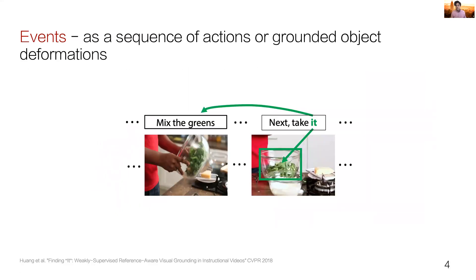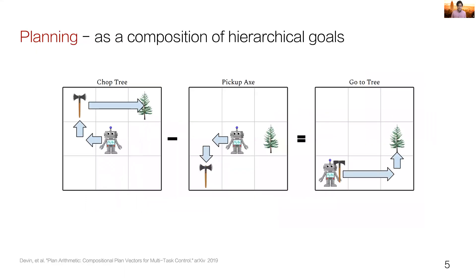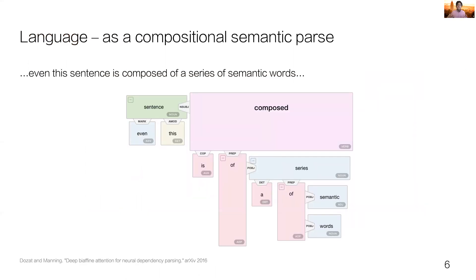Representation of events as a sequence of actions and grounded object deformations have led to action graph models that ground object changes as edges within a graph representation. Planning can also be described as a set of hierarchical goals, allowing the ability to generalize new instructions, leading to numerous hierarchical reinforcement learning algorithms. Even sentences are composed of semantic words, and the NLP community has developed syntactic and semantic dependency parses drawing inspiration from linguistic inquiry.